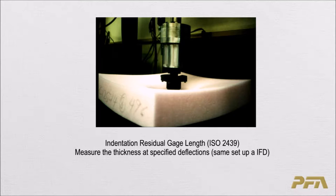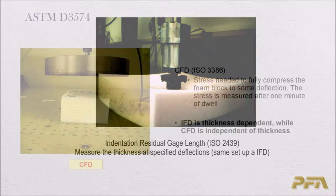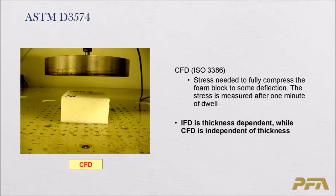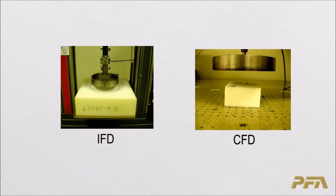The IRGD test is very similar to the IFD test, but instead of a specified thickness deflection they apply a force and then measure thickness. Common force values are 4.5 newtons, 110 newtons, and 220 newtons. Then there is CFD — Compression Force Deflection — which is the stress needed to fully compress the foam block to a specified deflection. The stress is measured after one minute of dwell. The IFD is an indentation producing edge effects, while the CFD compresses the entire foam sample.